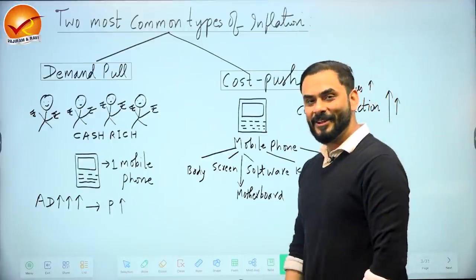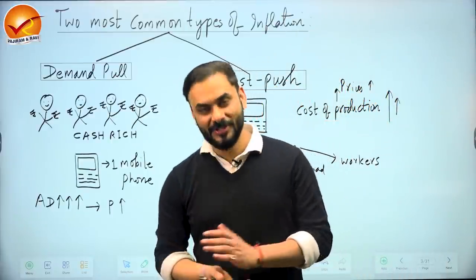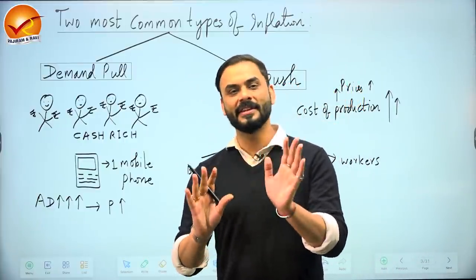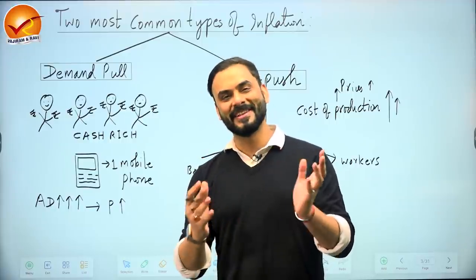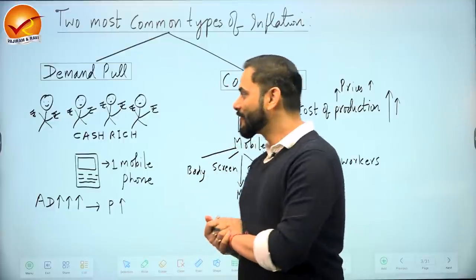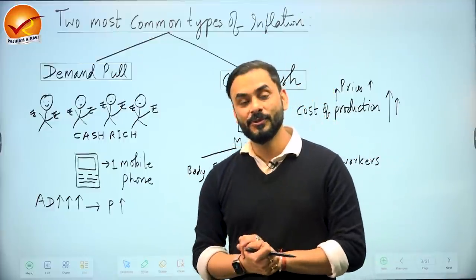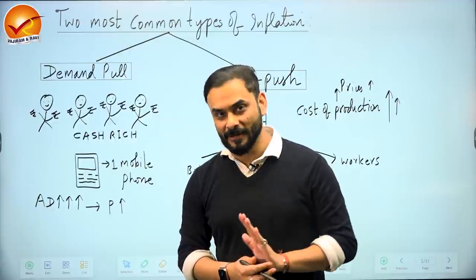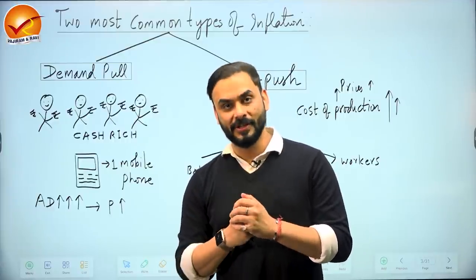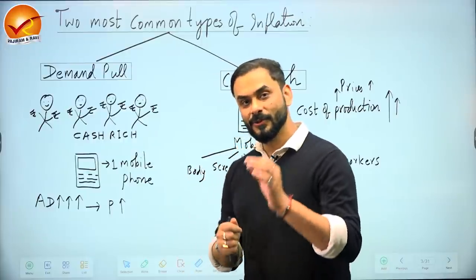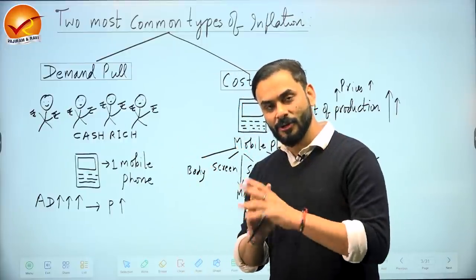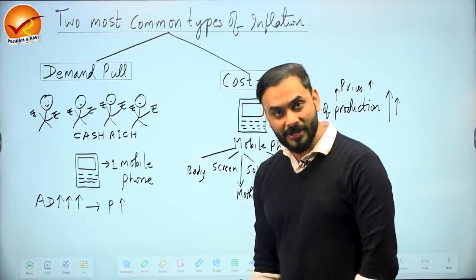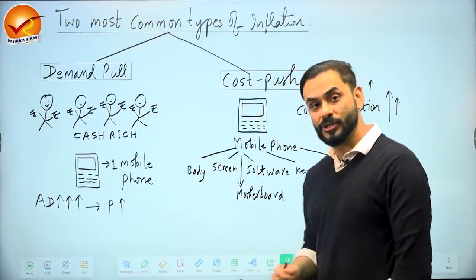Before we start the analysis of this chapter from the Economic Survey, let me help you understand some very basic things. There is no harm in brushing up the basics. If somebody asked you to name two most common types or causes of inflation, there are two things that lead to inflation: number one is demand-pull inflation, and number two is cost-push inflation.